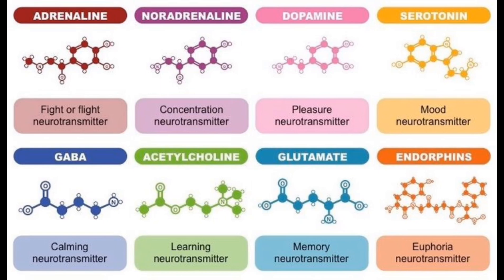Glutamate is a neurotransmitter involved in learning and memory. The next one is GABA. GABA is involved in our relaxing conditions and helps reduce anxiety.